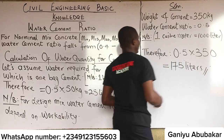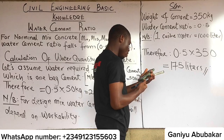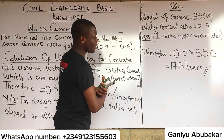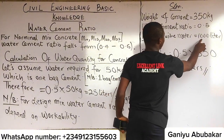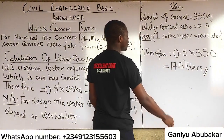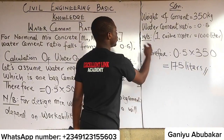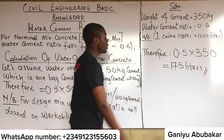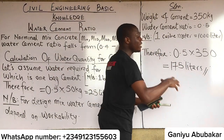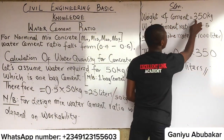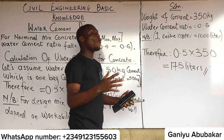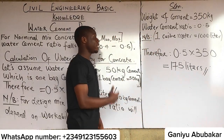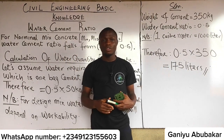We need 175 liters to mix 350 kg of cement. Also note that one cubic meter equals 1,000 liters. So if I divide 175 liters by 1,000, I get the equivalent value in cubic meters. The answer to the question — how many liters of water are needed — is 175 liters. That is the concept behind how to calculate water cement ratio.